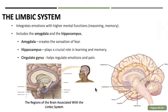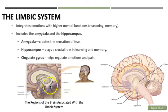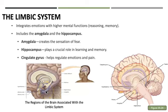The limbic system helps regulate our emotions with higher mental functions such as reasoning and memory. It includes the amygdala, as well as the hippocampus — which is crucial for learning and memory, especially long-term memories — and the cingulate gyrus, which helps with emotions and pain.